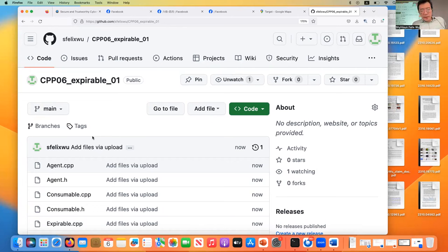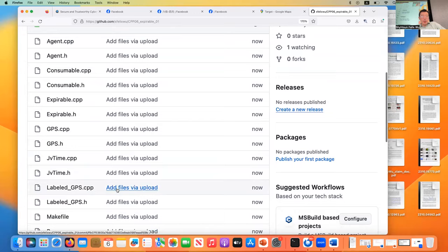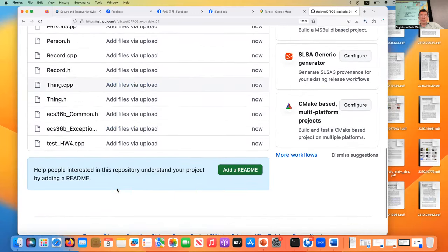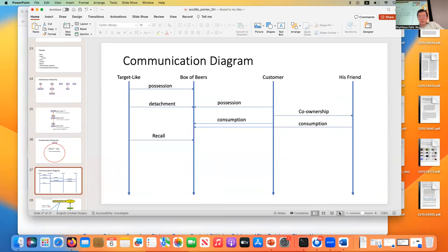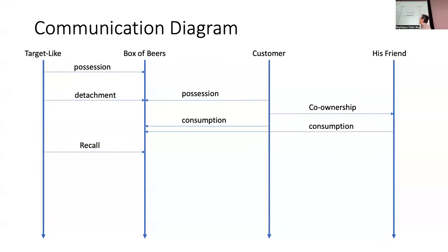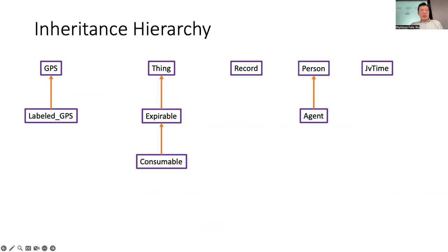I just uploaded what I'll call a partial implementation of homework assignment number four, presented last time with all the classes and some of the test program. If you look at the communication chart, the program has you implement the first three messages: possession and detachment. It has all the classes we presented. I did change the name from 'expiration' to 'expirable' — same inheritance class, just a different name.